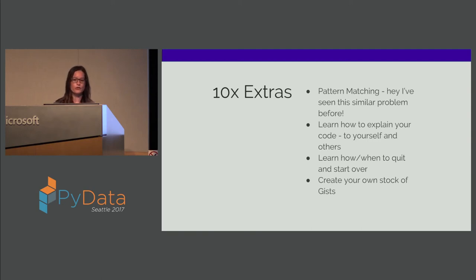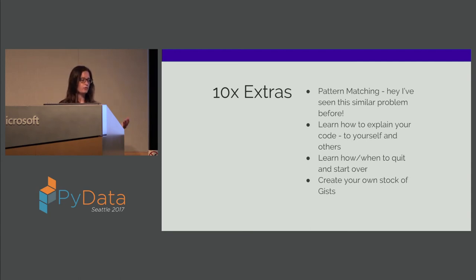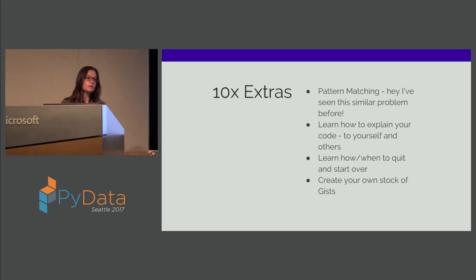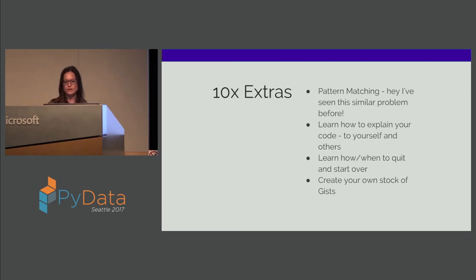The second is: learn how to explain your code to yourself and others. Whether you're doing whiteboarding interviews, pair programming, or code reviews — you need to understand what you wrote and not just know that Stack Overflow said to do it. Get used to talking about and explaining your code. Sometimes you'll catch your own errors that way. Whether you buy a rubber duck and tell it what you wrote, or get someone else and explain it — it's definitely worth practicing.